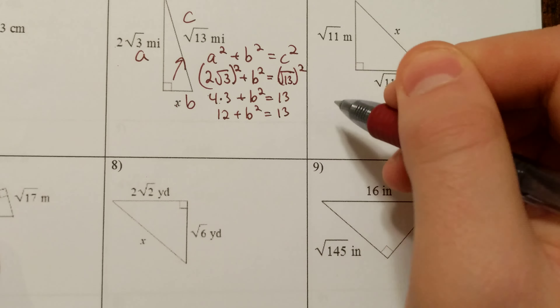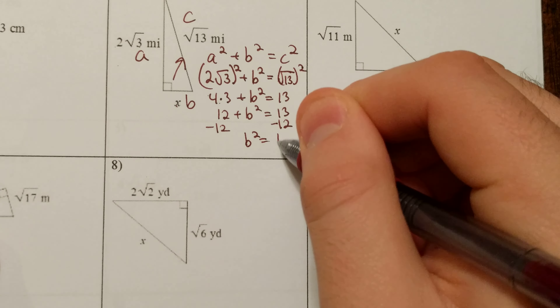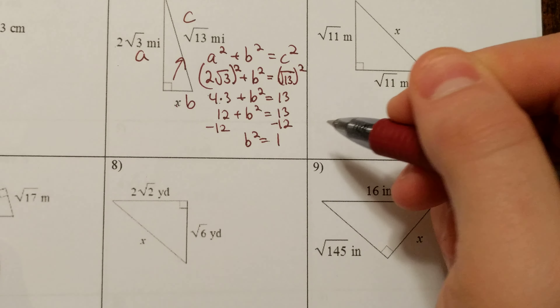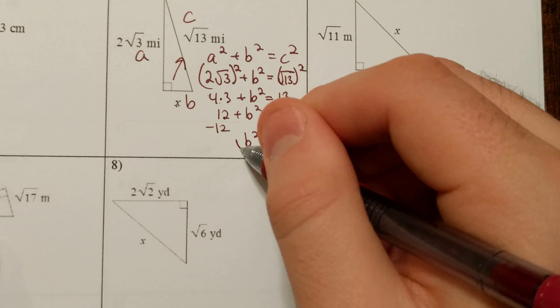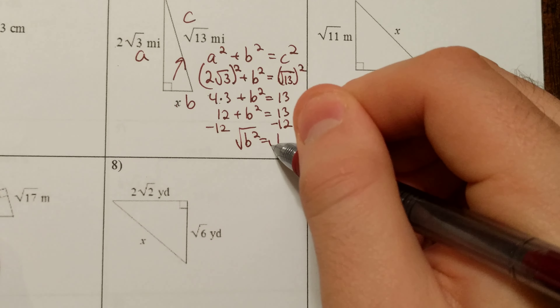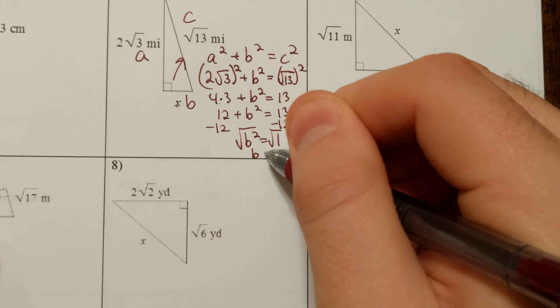So we evaluate 4 times 3 and get 12. Then subtract 12 from both sides — the inverse of addition — giving us B squared equals 1. Taking the square root of both sides, B equals 1 mile.